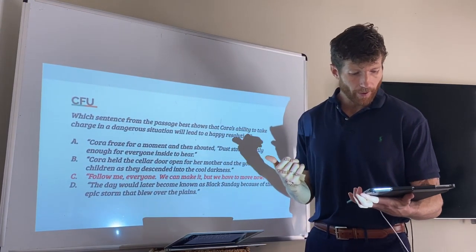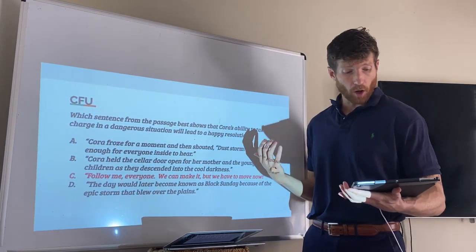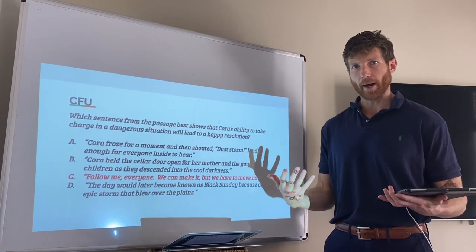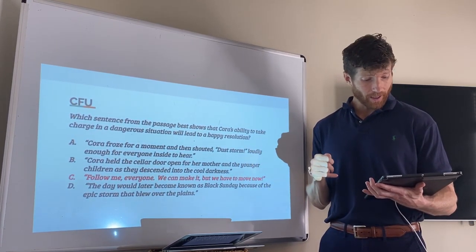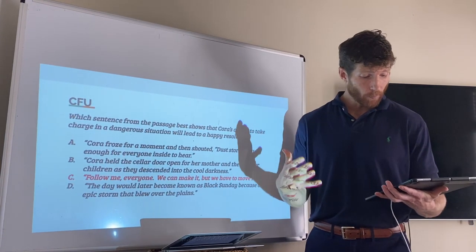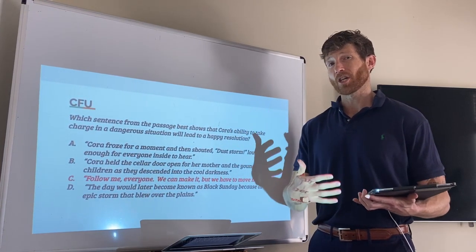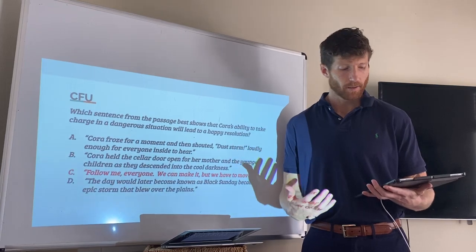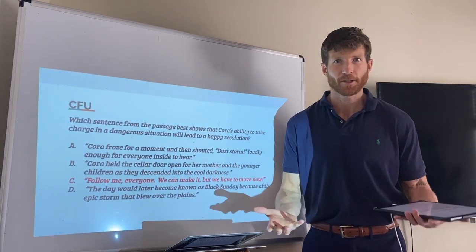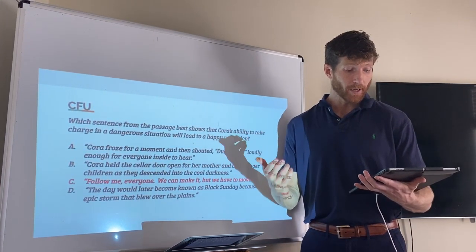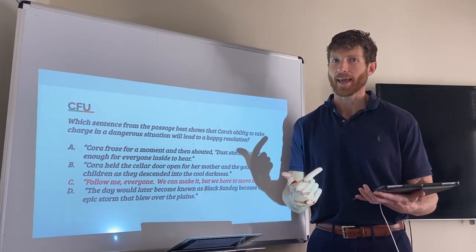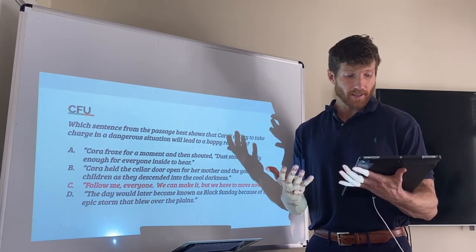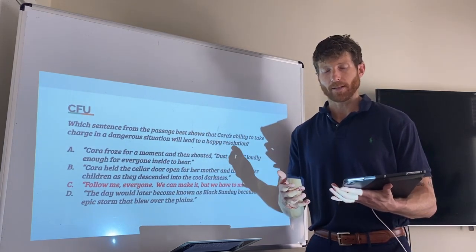Answer choice A is incorrect because it shows Cora taking charge but does not suggest a happy resolution or ending to the story. Choice B is also incorrect — it shows Cora opening a door but does not necessarily suggest her taking charge or show any happy resolution. Choice C is correct: it shows Cora taking charge and also indicates a happy resolution. Choice D is incorrect because the sentence suggests neither Cora taking charge nor a happy resolution.